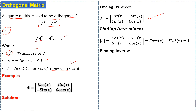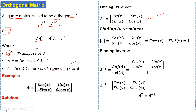Next we find the determinant of the matrix. The determinant of this matrix is 1. So next we will find the inverse of the matrix. The inverse of this matrix is equal to the adjoint of A divided by the determinant of the matrix.